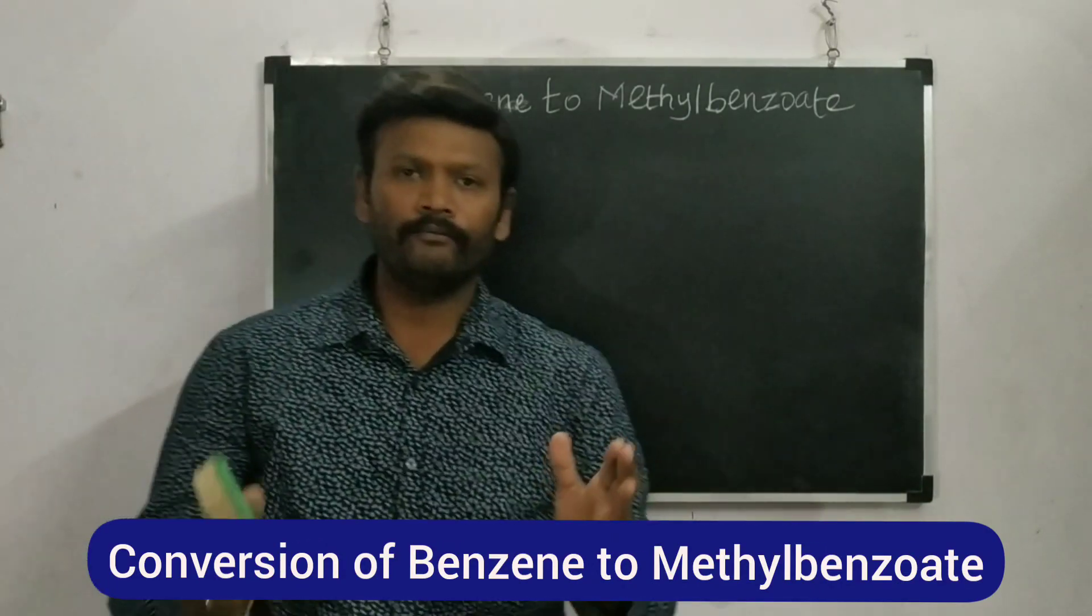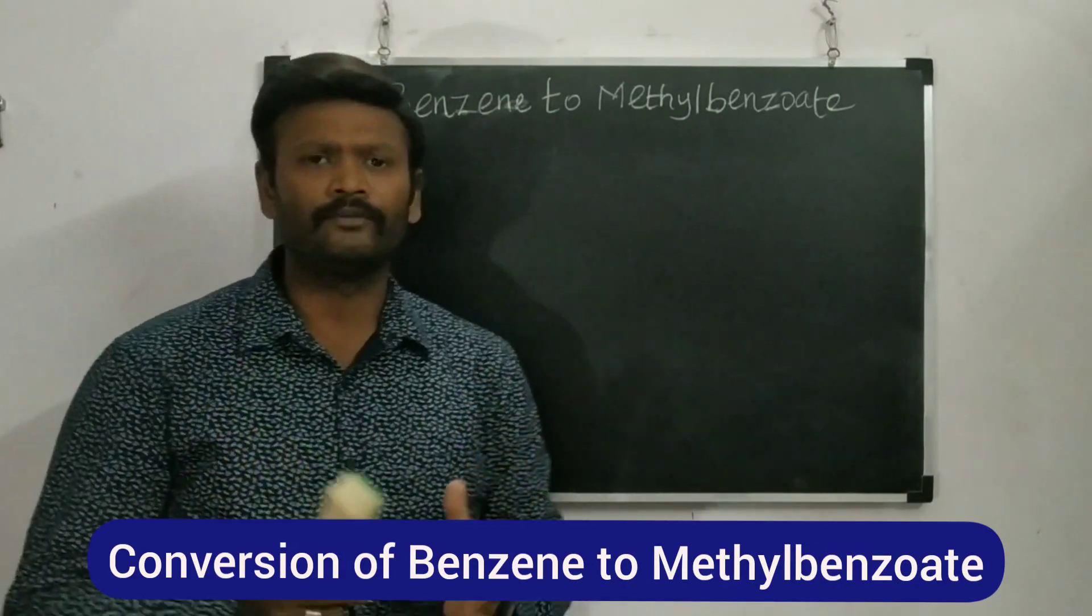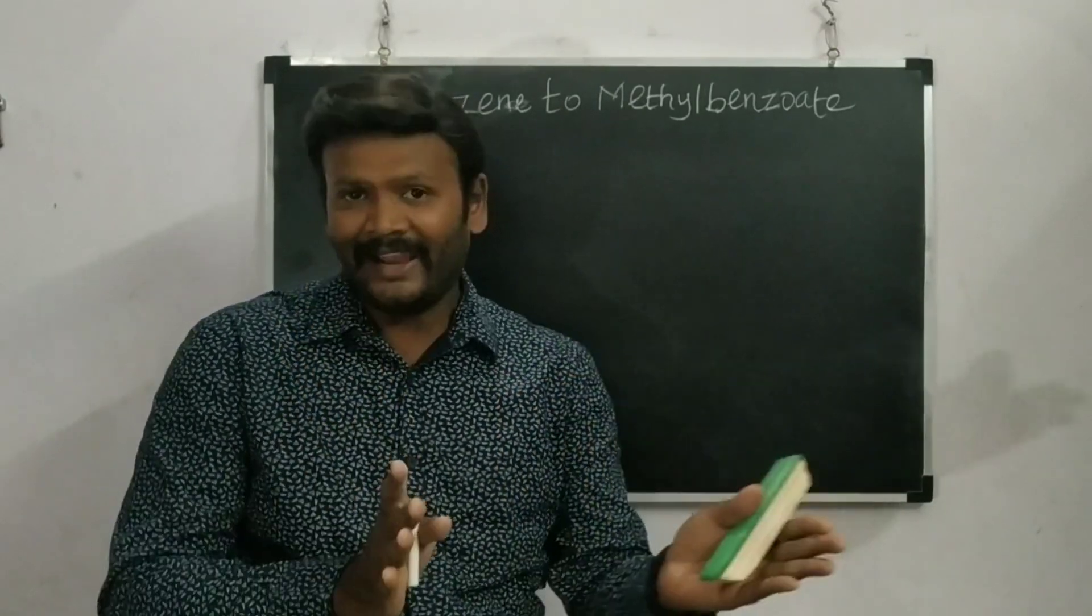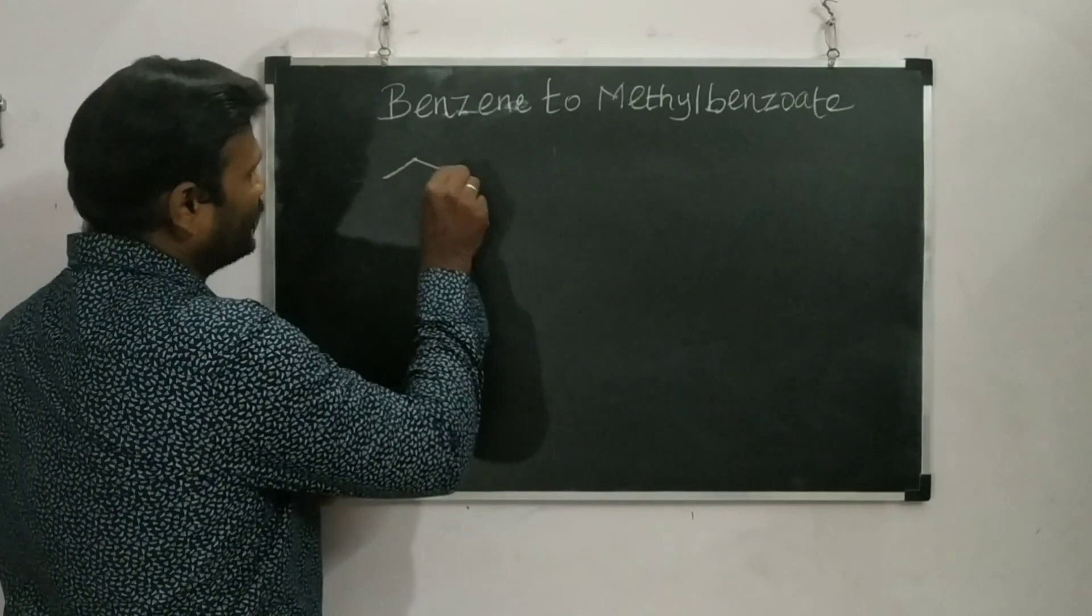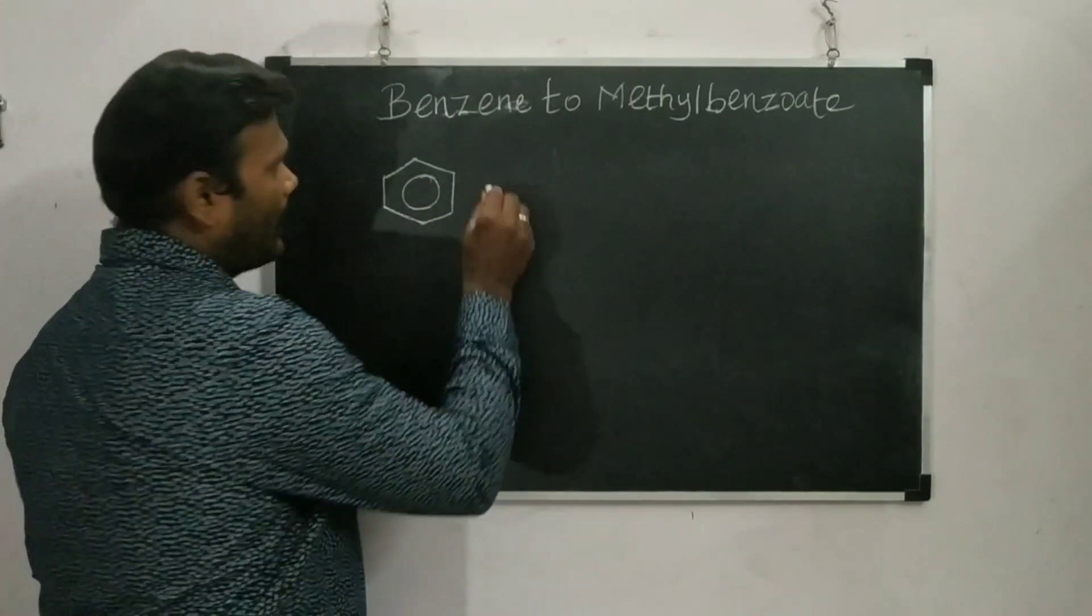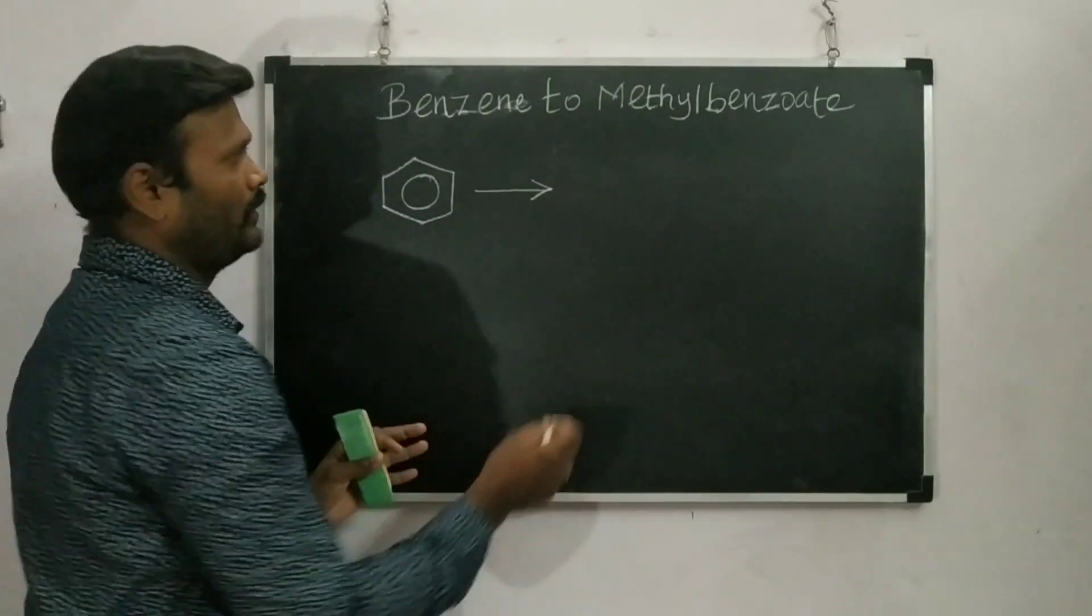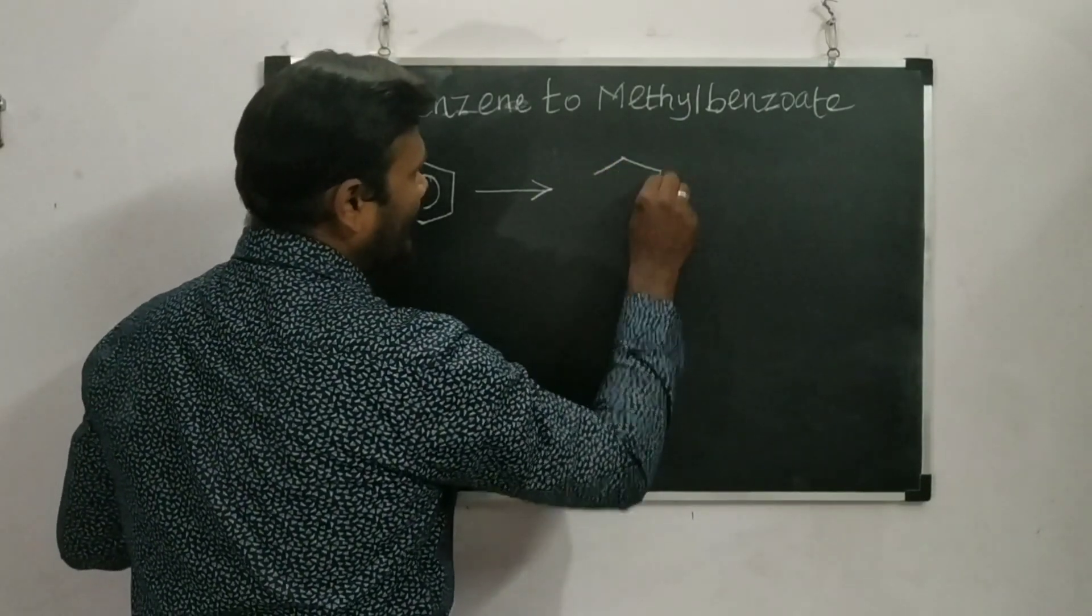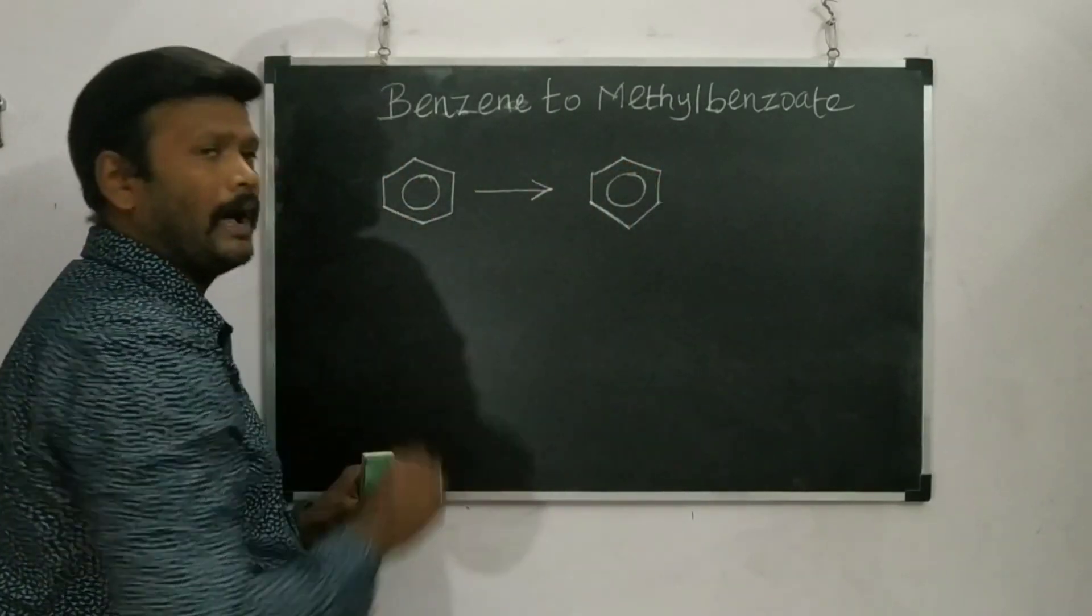Whenever we start doing the conversion, we have to be very careful while writing the reactant as well as the product. Let us start. Let's write the reactant. My reactant is benzene and my product is methylbenzoate. I have to write the structure of methylbenzoate very carefully.